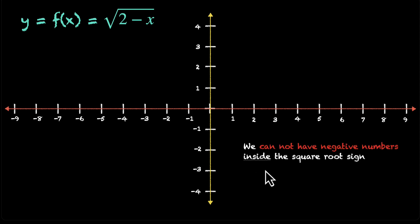We know that we cannot have negative numbers inside the square root sign. This means 2 minus x that's sitting inside the square root, that can't be negative. That has to be greater than or equal to 0. A little rearranging will give us x is less than or equal to 2. This means that x is restricted. x cannot have values more than 2.